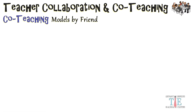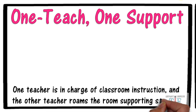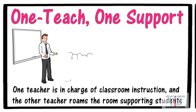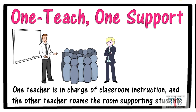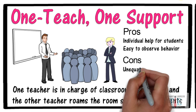The first model is One Teach, One Support. In this model, one teacher is in charge of the classroom instruction, and the other teacher roams the room supporting students. You'll usually see a general education teacher running the lesson, and the special education teacher walking around helping students in any way possible. The positives include individual help for students and easy observation of behavior. The negatives are unequal power distribution and students immediately expecting help.